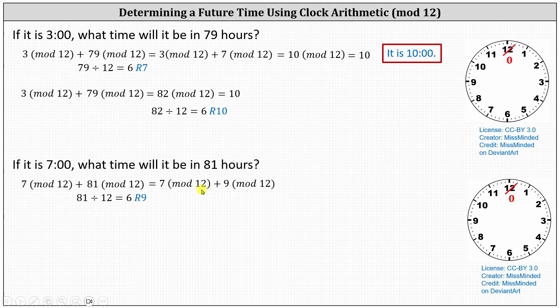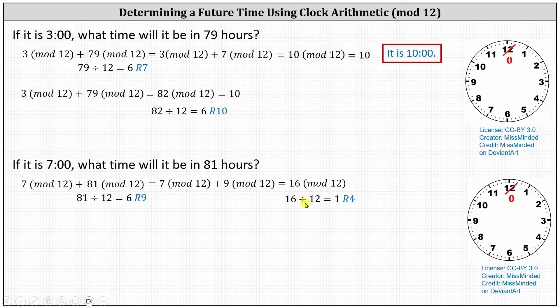Here we have seven mod 12 plus nine mod 12. And here's one drawback in using this first method — notice when we sum seven and nine, the result is greater than or equal to 12. We get 16 mod 12, and now we need to evaluate this to get our final result. 16 divided by 12 equals one with a remainder of four, indicating it's four o'clock.